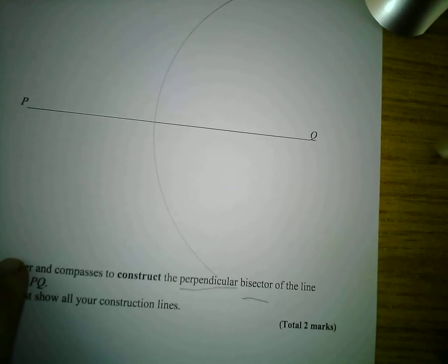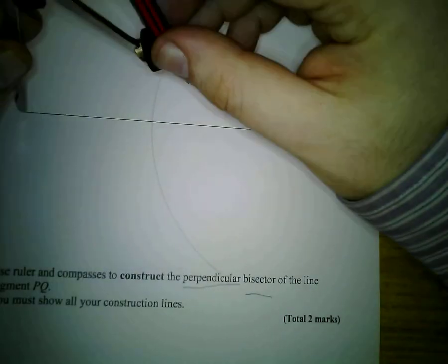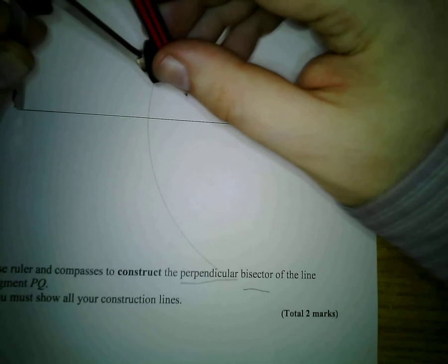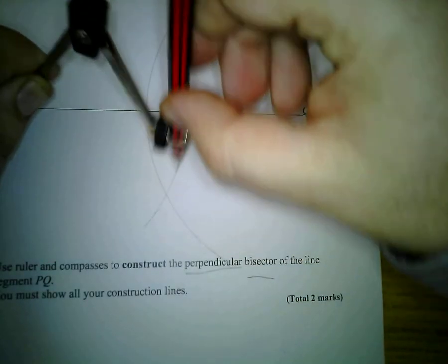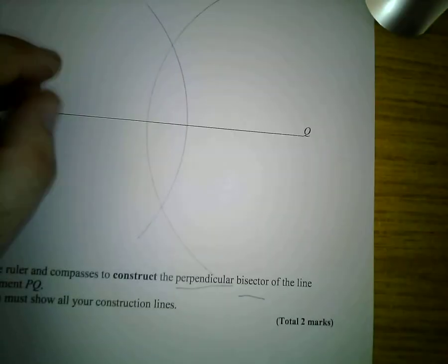What I'm going to do now is I'm going to take my compass. I am not going to change the width of it and I'm going to put my compass at P, the other end of the line. I'm going to do the same. I'm going to draw a big arc like that.